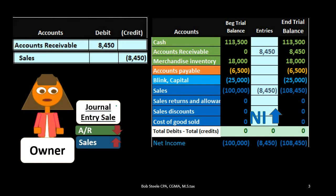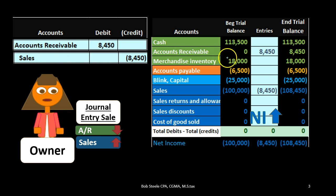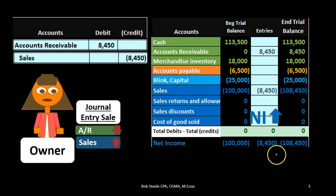Looking at that journal entry more fully, this is the first half — the sales half — where we increase accounts receivable and increase the revenue account, which for a merchandiser is often called sales. If we post that out, the receivables are going up with a debit increasing the receivable, and a credit increasing sales. Both receivable and sales are going up, increasing net income.